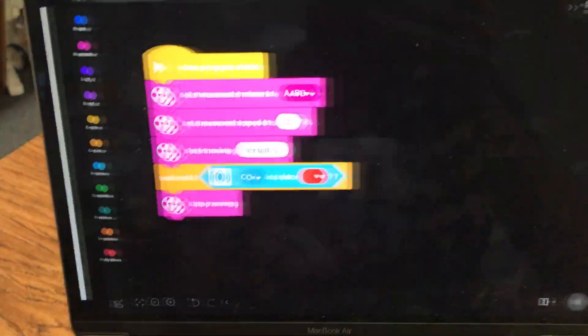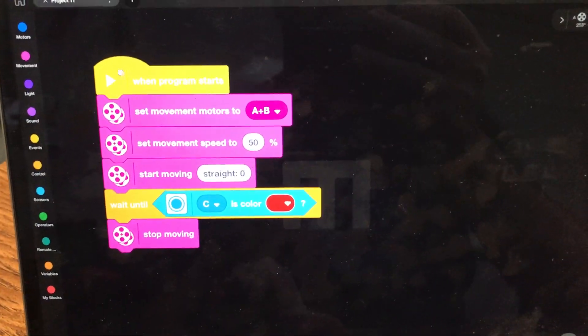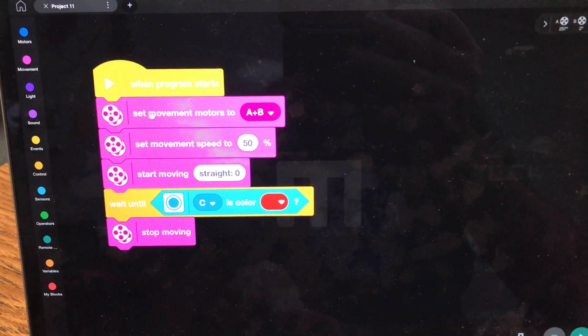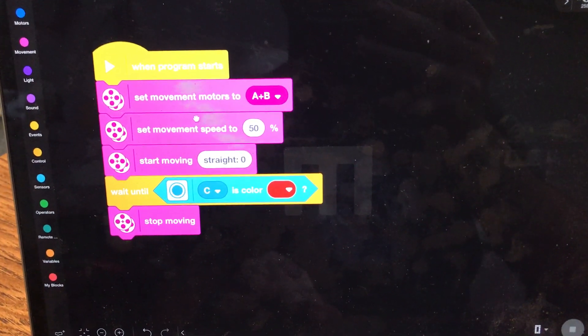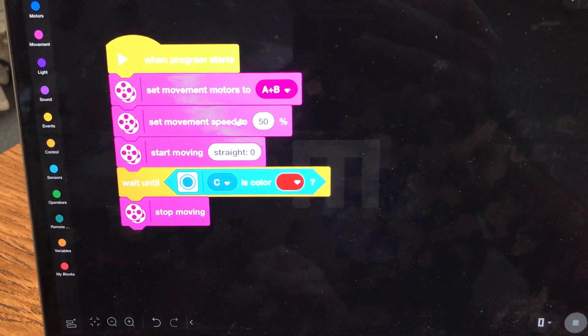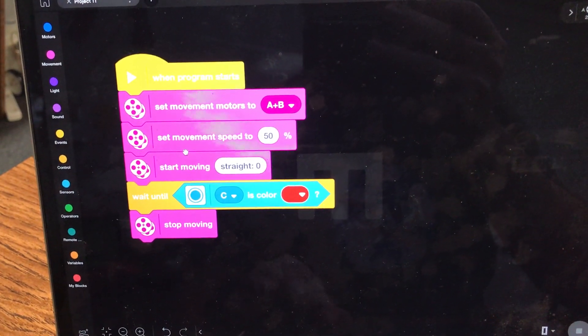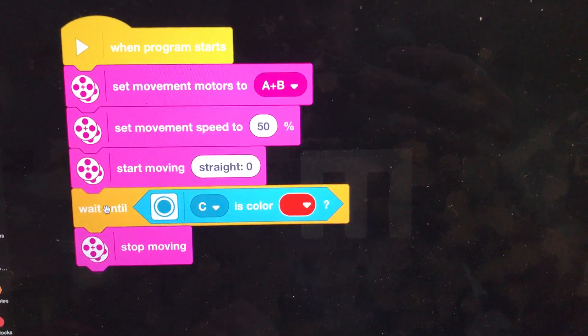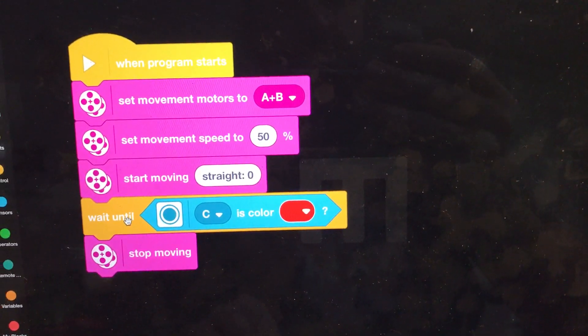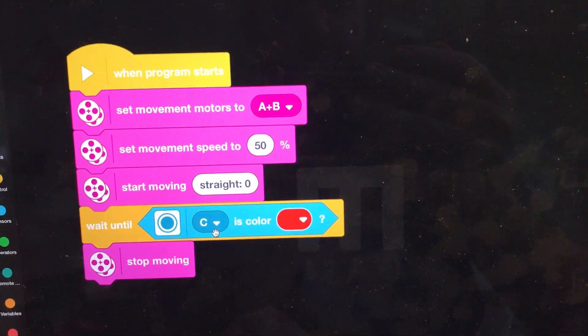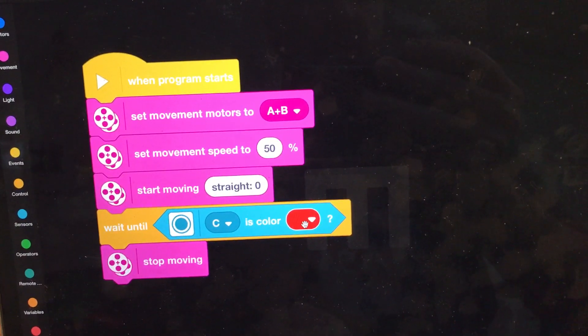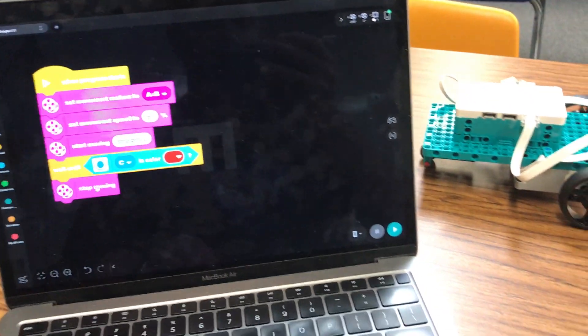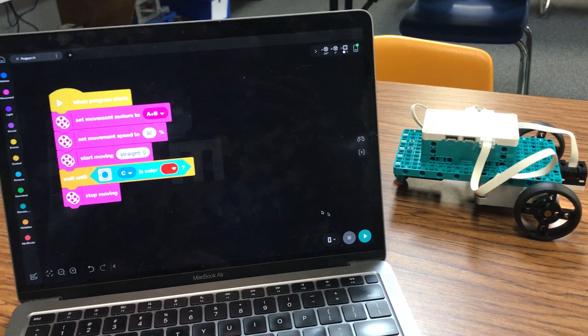So without further ado, here's a look at the code. Some of this is a little bit redundant but I think it's good standard practice. Here I'm setting the movement motors to A and B, I'm setting the movement speed to 50%, and then I'm just start moving and I've got it set to straight. And then if you look here I have a wait until block, so I say wait until the color sensor which is on port C reads red, and when that happens I stop moving.